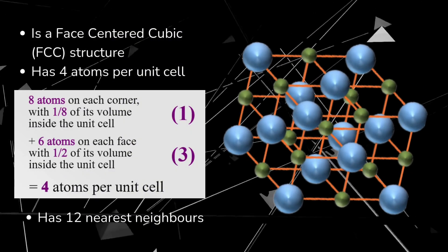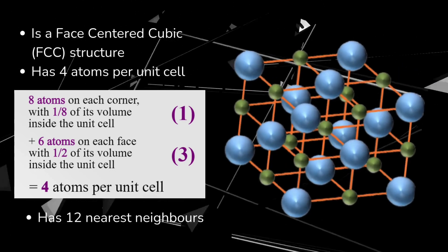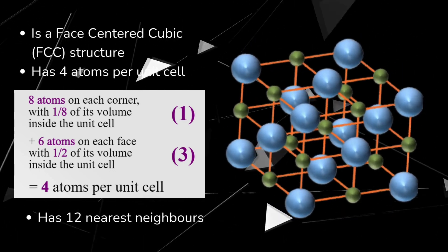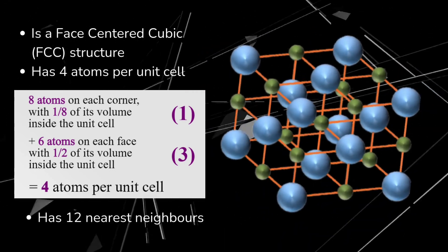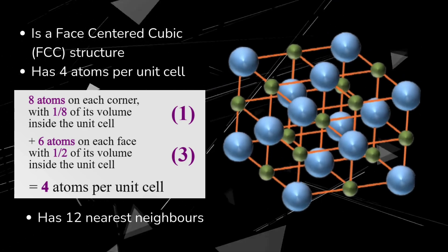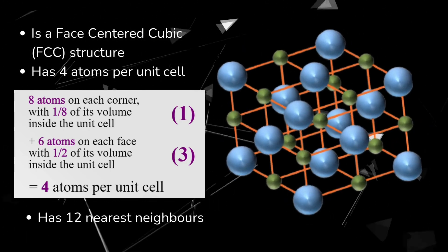The salt crystal has a face-centered cubic, or FCC, structure. It has 4 atoms per unit cell and 12 nearest neighbours.